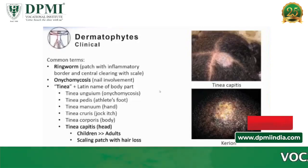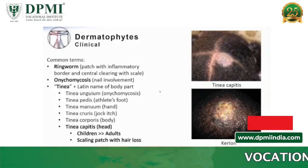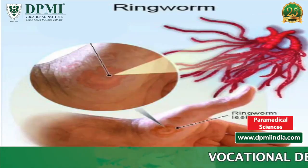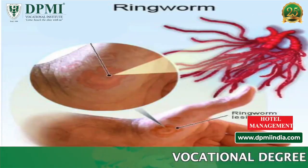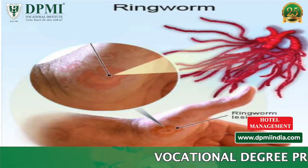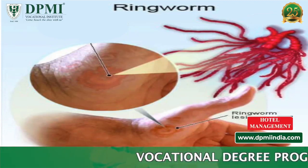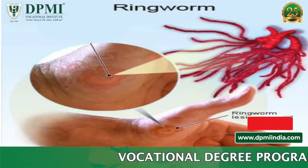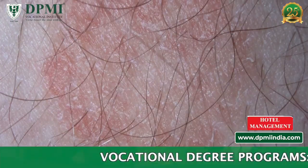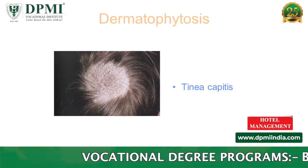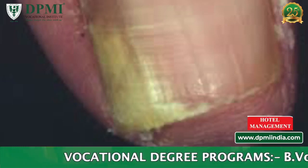Dermatophytes are fungi that require keratin for growth. Dermatophyte fungi are ringworm fungi, also called tinea. These fungi can cause superficial infections of the skin, hair, and nails.